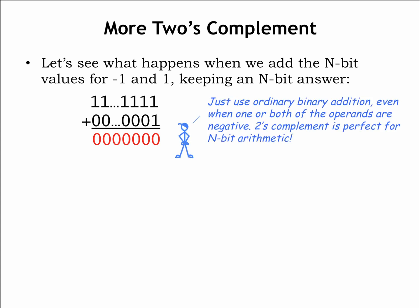Notice that we just used ordinary binary addition, even when one or both of the operands are negative. 2's complement is perfect for n-bit arithmetic.